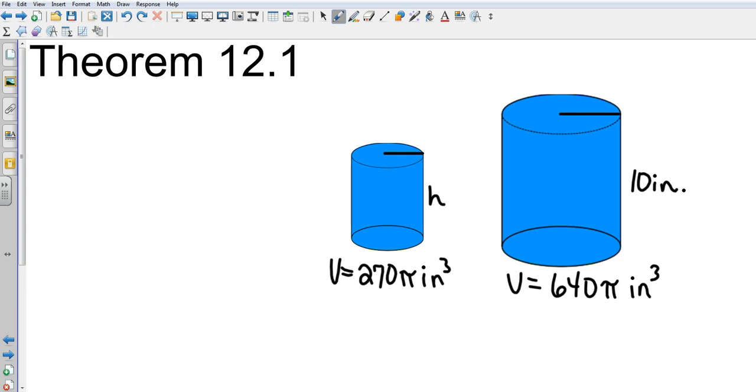We're looking at Theorem 12.1, and it has to do with them stating that the shapes are already similar. There are some shortcuts where I can find the different relationships. If they are similar, they're going to have a scale factor, and that scale factor is going to be a to b.